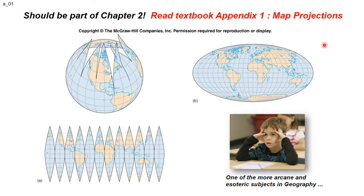In the new textbook edition, a lot of the material about map projections was moved to an appendix — thinking it was just ancillary information. I'm putting it back in the chapter because I think it's pretty important. Map projections are a pretty arcane, esoteric subject in geography, so you'd have to be a cartographer to go to a particular depth of understanding with these.